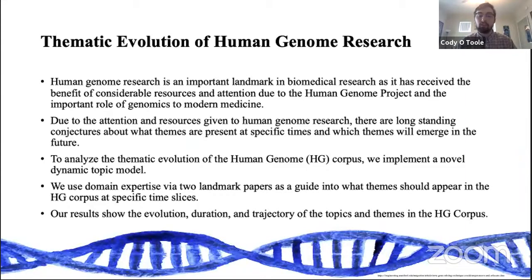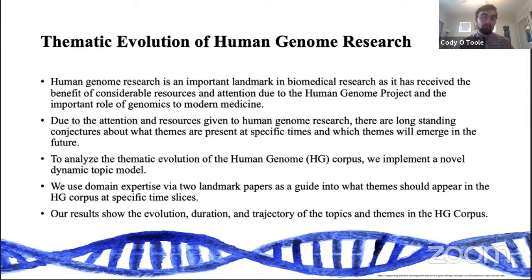As a brief abstract: human genome research is an important landmark in biomedical research and has received considerable resources and attention due to the Human Genome Project and the important role of genomics in modern medicine. Due to this attention, there are long-standing conjectures about what themes are present at specific times and which themes will emerge in the future. We implement a novel dynamic topic model and use domain expertise via two landmark papers as a guide to what themes should appear at specific time slices. Our results will show the evolution, duration, and trajectory of topics and themes in the corpus.